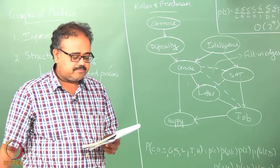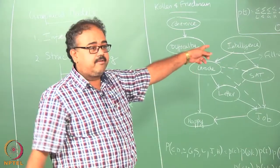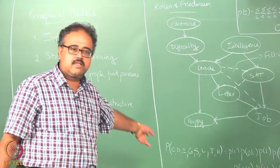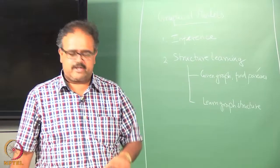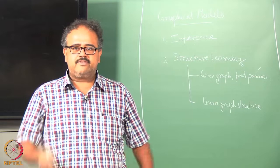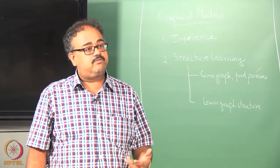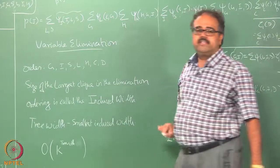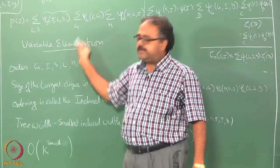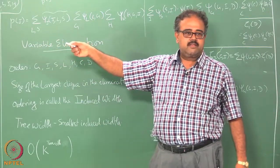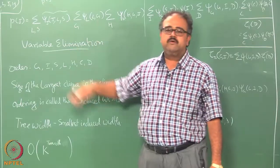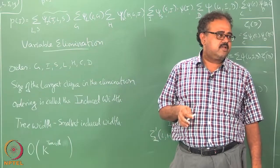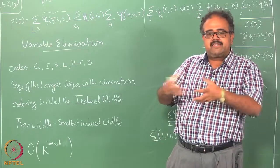But there is still a problem. If I ask you to find p(J), you basically have to redo this computation all over again. Many of these tables computed internally could actually be reused. If I want to find p(H), up till a certain point everything can be reused, and some of this computation could also be reused in appropriately modified form. But you end up doing everything all over again. There are more efficient techniques where you can keep caching these things.